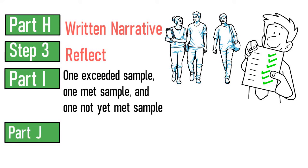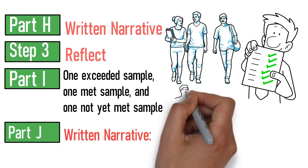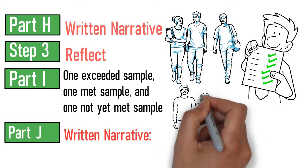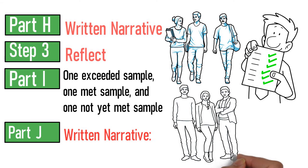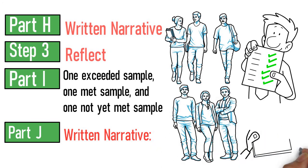Part J, Written Narrative: Analysis of formal assessment results and reflection of whole class and three students, no more than five pages. The template is provided in the handbook.